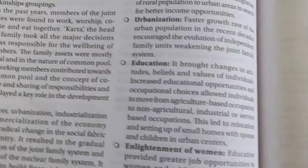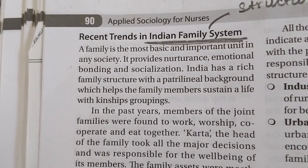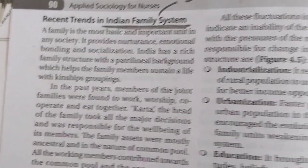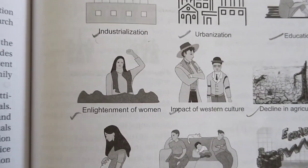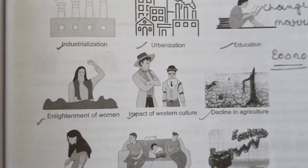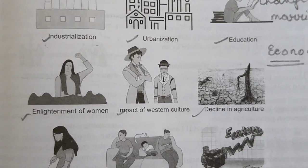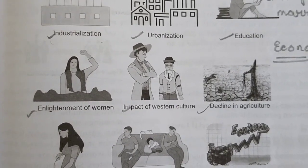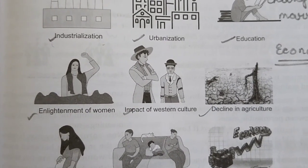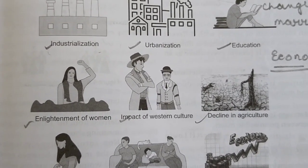Next our topic is recent trends in the Indian family system. There are many factors affecting the Indian family system. First, we will explain the effect of marriage and industries. Urbanization and industries are interconnected — as urban areas grow more, these factors influence the family system. Education is also a main factor, contributing to the enlightenment of women, giving them greater opportunities and authority to work in every field.